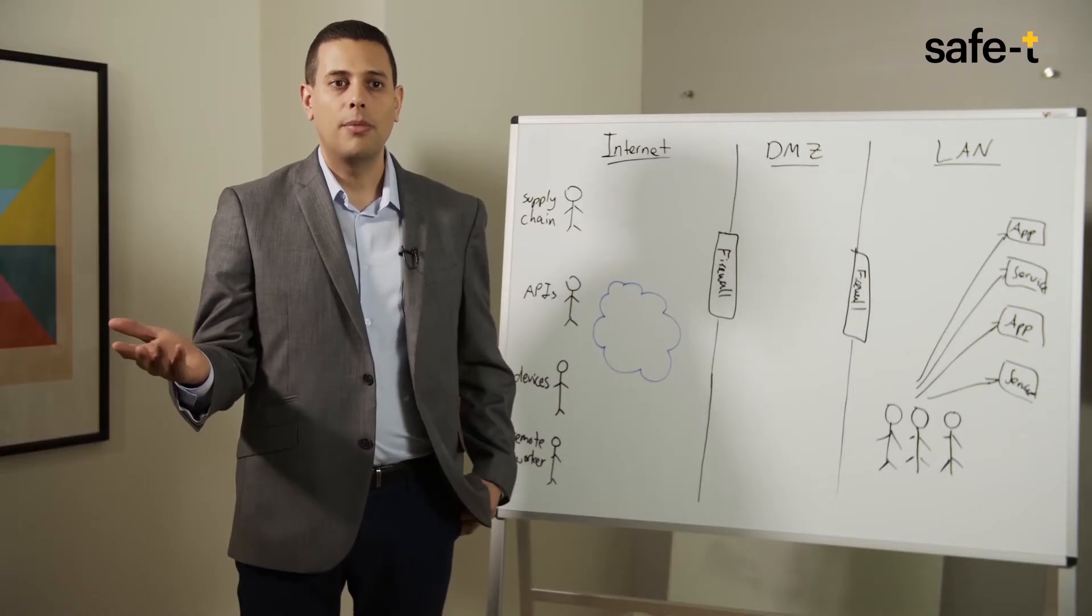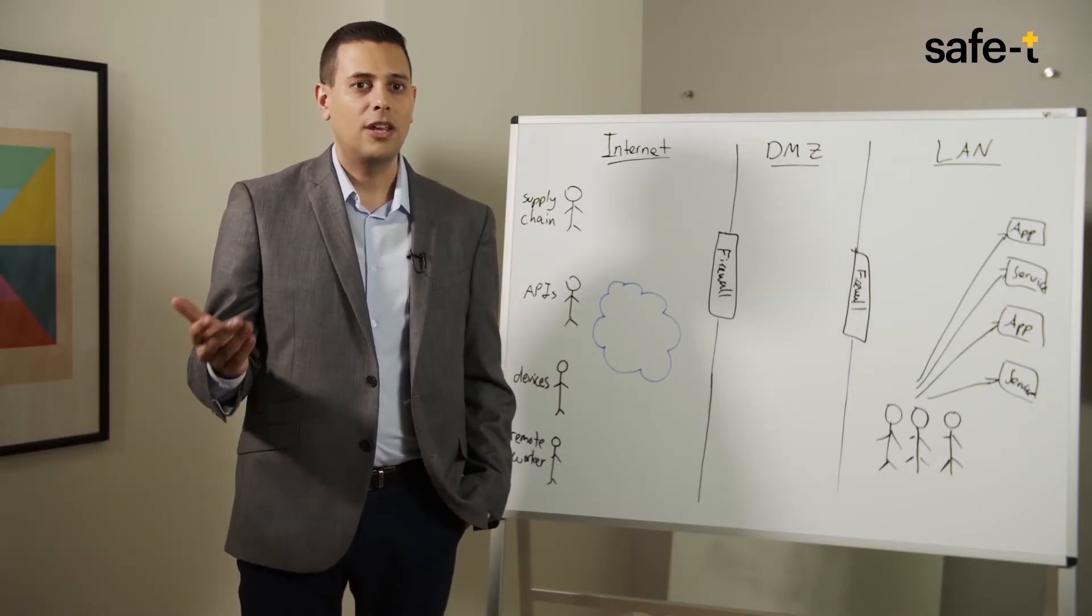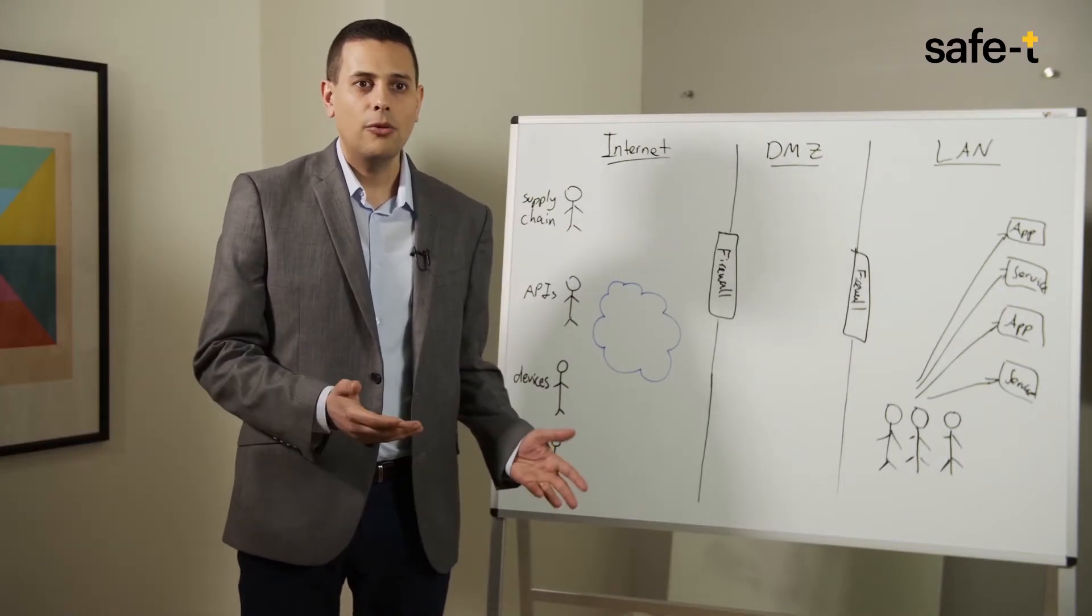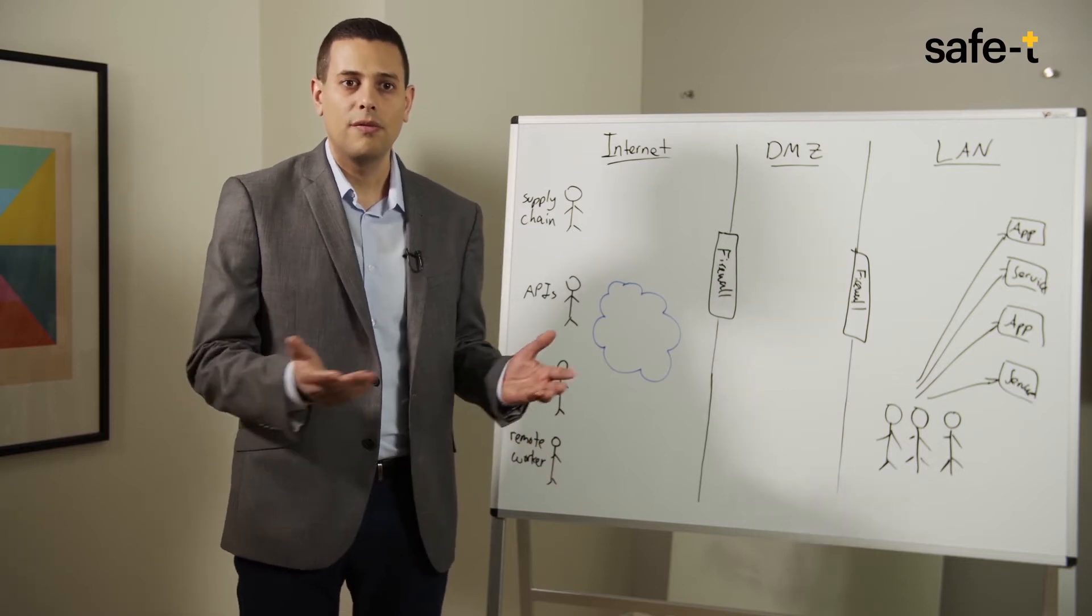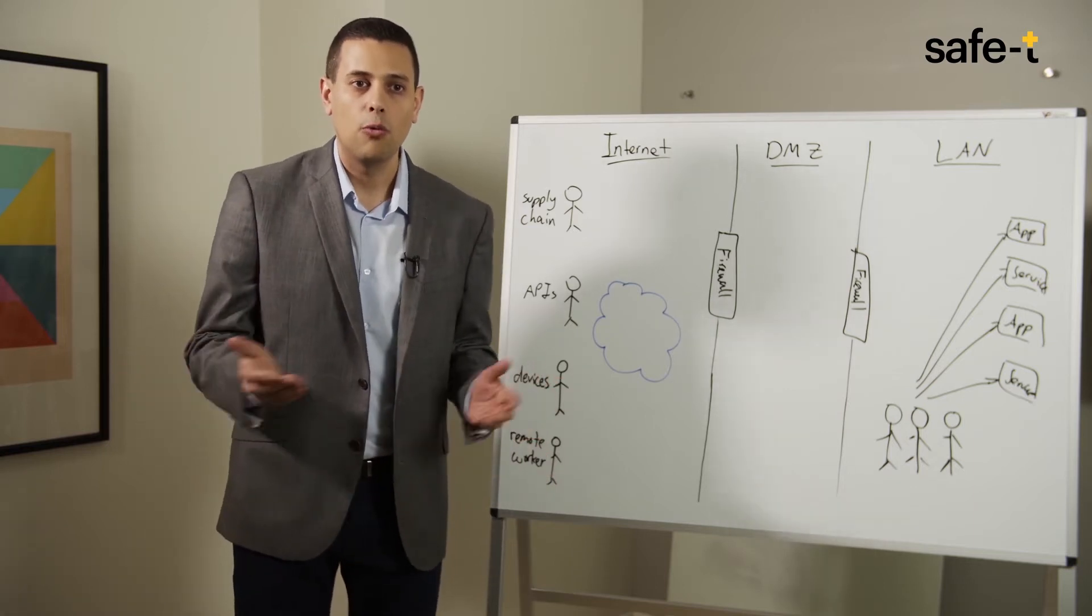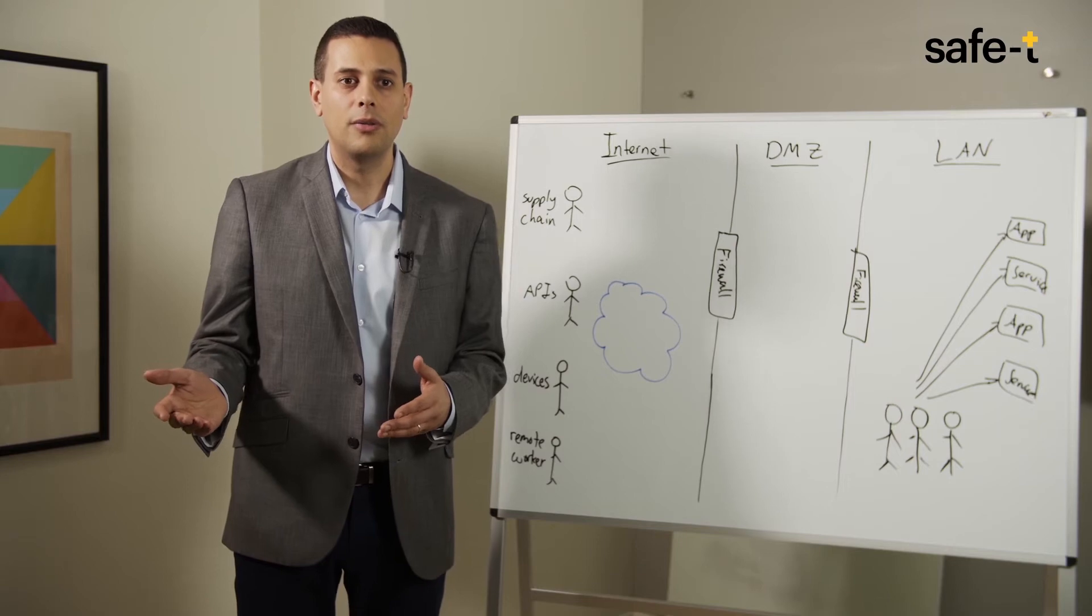So how do we provide external access? That's a question with many possible answers, but they all have the same thing in common. It doesn't matter whether you're using a VPN, a reverse proxy, a web portal, a WAF, a virtual desktop environment, or even an IEM solution. At the end of the day, you're forced to compromise your perimeter by opening a port on your firewall to those services.